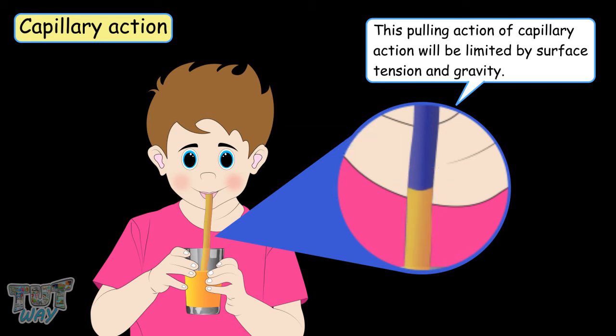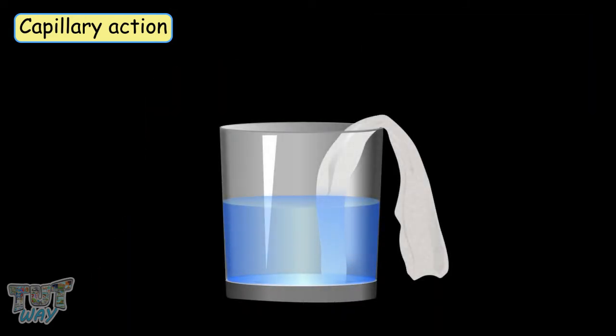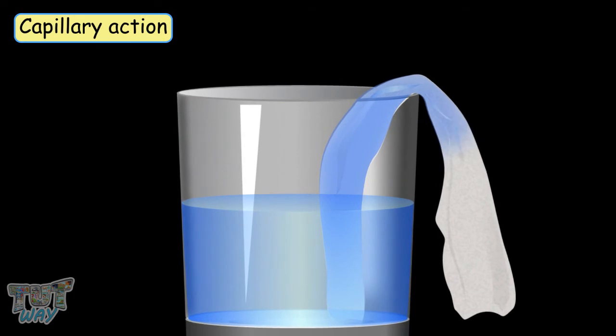The liquid will travel up the straw until its weight is exactly balanced by surface tension and gravity and it will eventually stop moving upwards. When we dip a tissue paper or a towel in a liquid, water travels up the tiny spaces in the paper and it is due to capillary action.